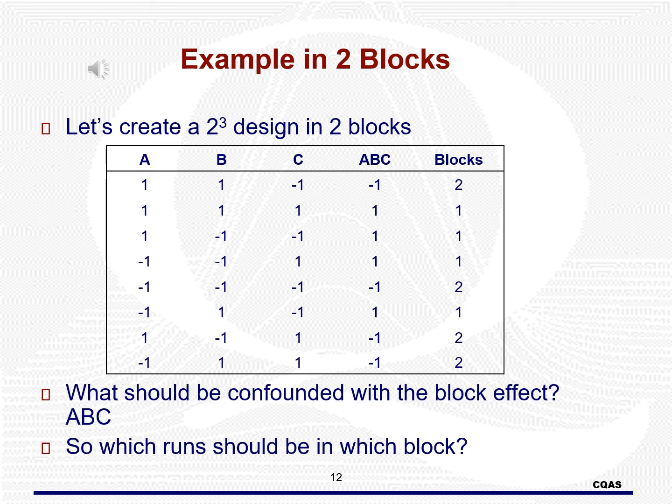Let's look at an example with three factors in two blocks. Since we have one degree of freedom for blocks, we need to choose one effect to confound with the block. In this case, we will choose the ABC interaction. This means we will set all of the runs where ABC is at a minus in one block, and all of the runs where ABC is at a plus in the other block.